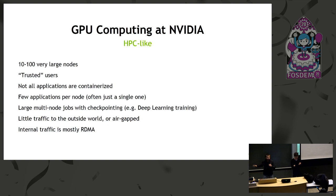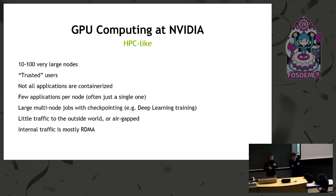At NVIDIA, we have very large nodes and we kind of trust our users, because our clusters are sometimes air-gapped with very little access to the outside. If someone uses a zero-day on our cluster, we're just going to fire them. We run trusted code. Not all applications are containerized — if an application is packaged well, don't force users to use a container. This already eliminates Kubernetes, which requires everything to be containerized. We have few applications per node, we're not very dense, and we have multi-node jobs that need to start on 30 nodes in parallel. And mostly little traffic to the outside world.